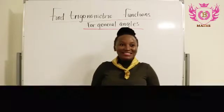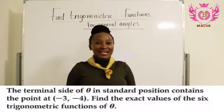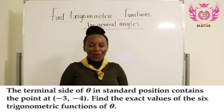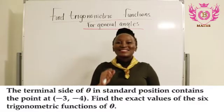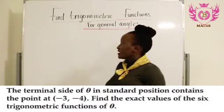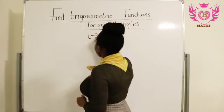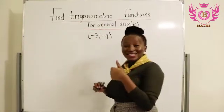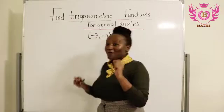The question for today is: the terminal side of theta in standard position contains the point (-3, -4). Find the exact six trigonometric functions for theta. So our point is (-3, -4) and we want to find the six trigonometric functions for theta.